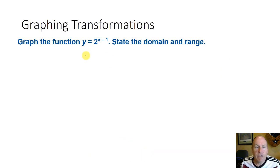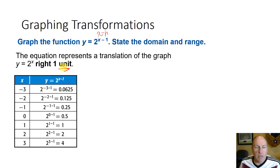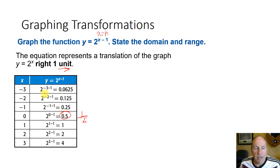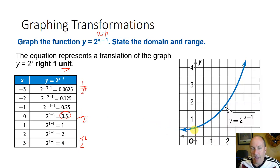Let's look at a different kind of shift: y = 2^(x-1). This takes the parent function y = 2^x and shifts it to the right by 1, because it's in the form x minus h where h is positive 1. At x = 0, we get 2^(0-1) = 2^(-1) = 1/2. For x = -3, we get 2^(-3-1) = 2^(-4) = 1/16, which is 0.0625. For x = 3, we get 2^(3-1) = 2^2 = 4.